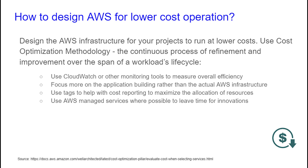Spot instances are 90% off the on-demand price, so I'm already saving costs right there. But if I need something more long-term, I would want to use reserved instances, which run for either one or three years and save up to 75% compared to the on-demand price. That's one way you can save costs. Thank you for watching.